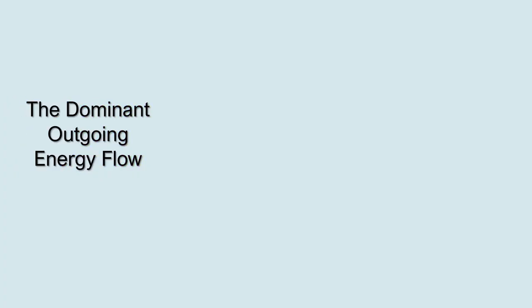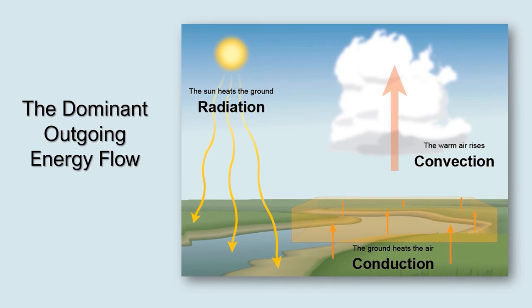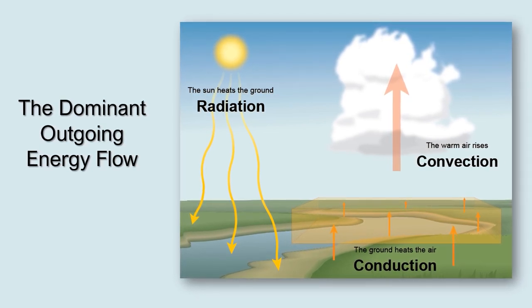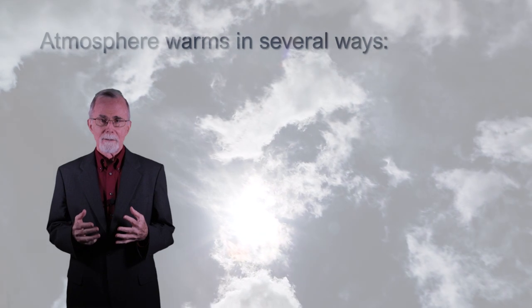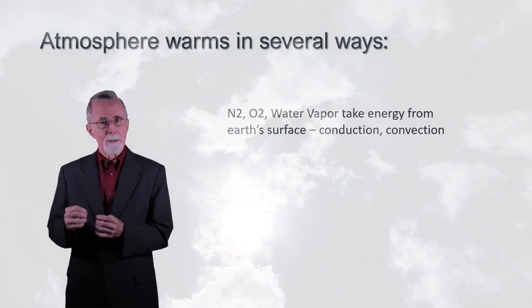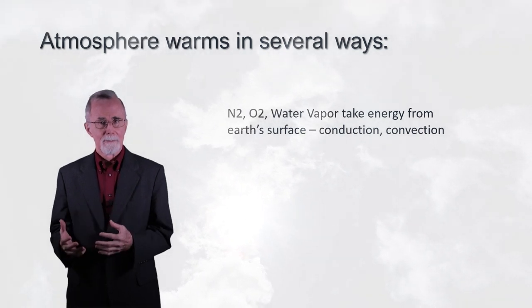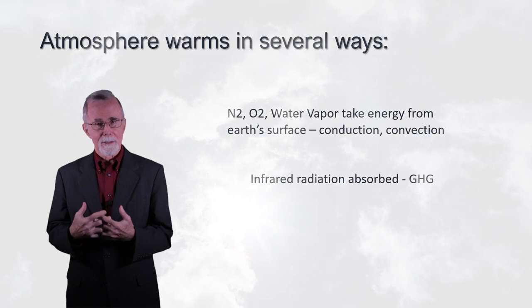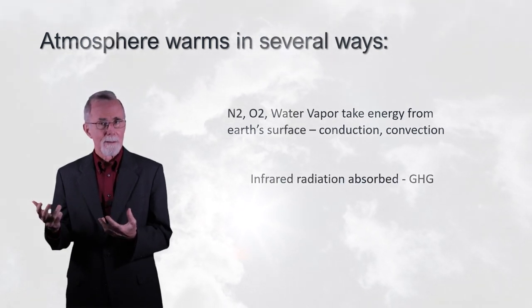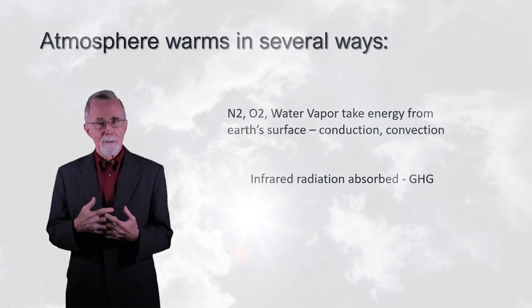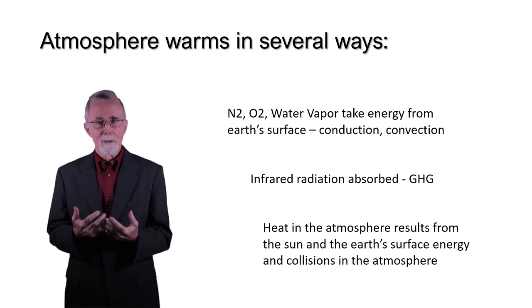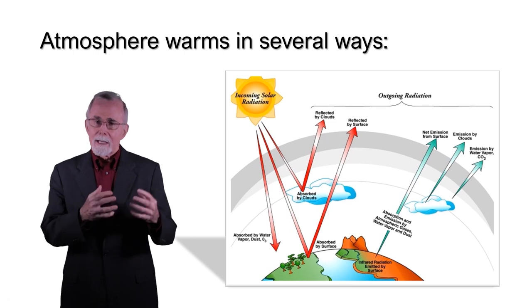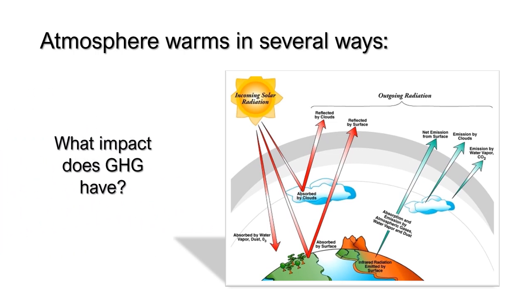The dominant outward energy flow at Earth's surface is actually conduction and convection. Radiation is the second largest energy release mechanism. The atmosphere warms in several ways. Primarily, N2, O2, and water vapor take energy from the Earth's surface through conduction and convection. Infrared radiation is absorbed by greenhouse gases or emitted to outer space. Heat in the atmosphere results from the Sun and the Earth's surface temperature energy. Collisions aid this flow of energy outward and the mixing of energy, as does radiation. The various streams of energy make up a complex system.